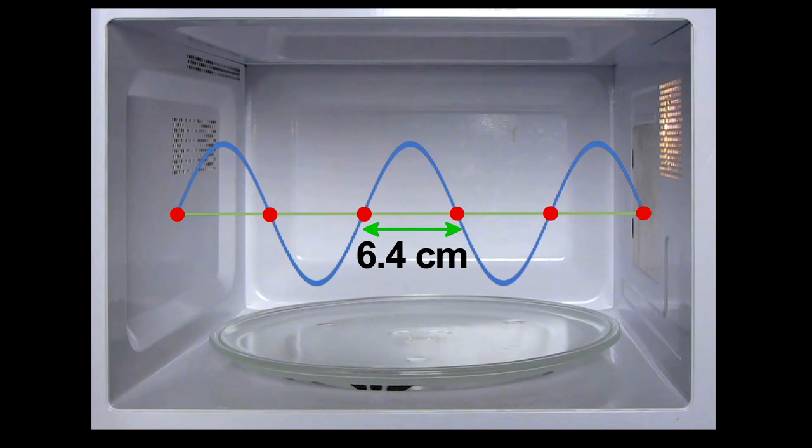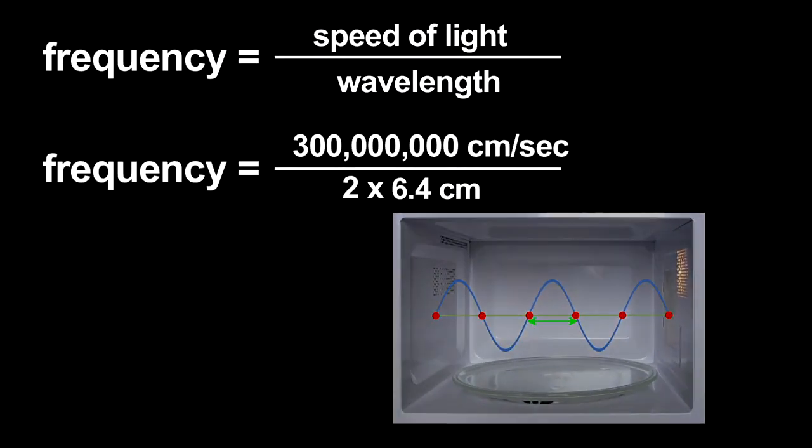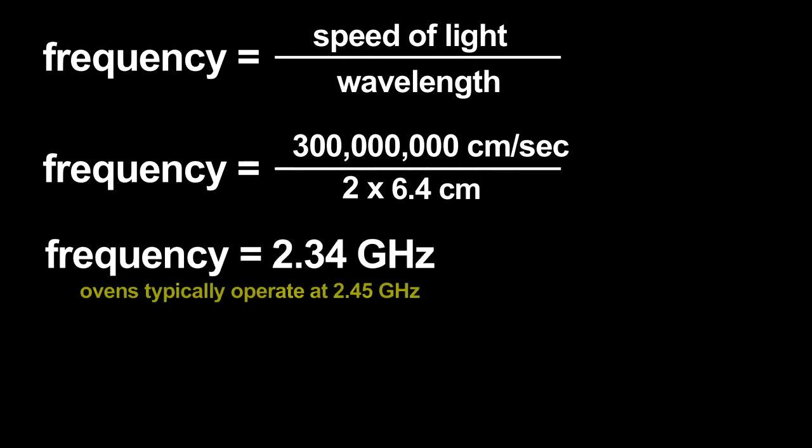Using that wavelength, I can estimate the microwave radiation's frequency. The frequency is related to the wavelength by the speed of light. I get an answer that only has a 4 or 5 percent error. Not bad for this primitive measurement.